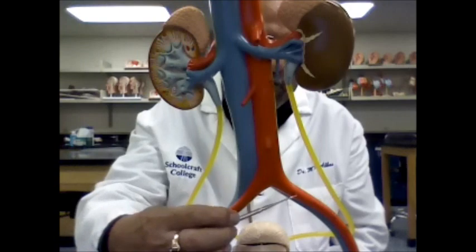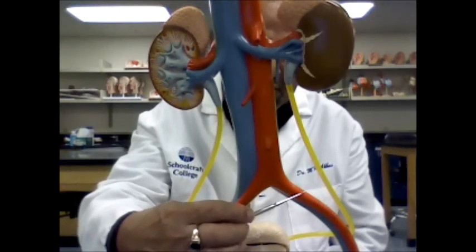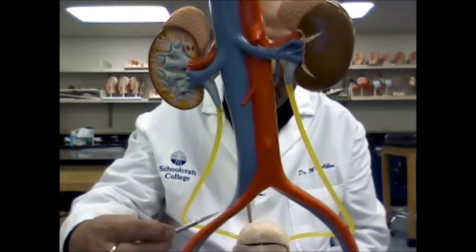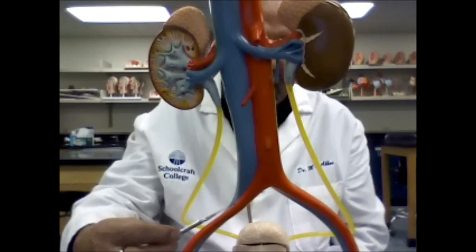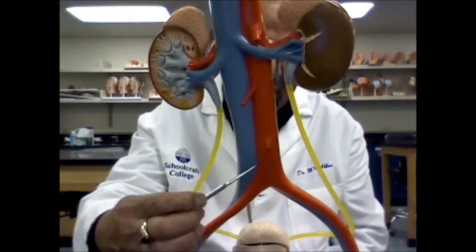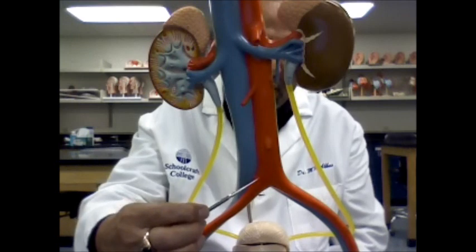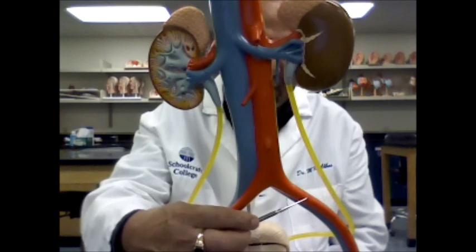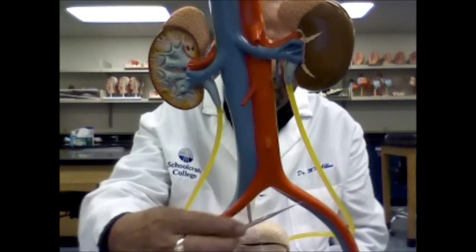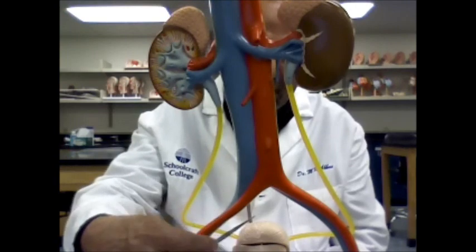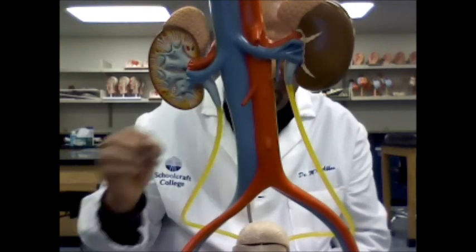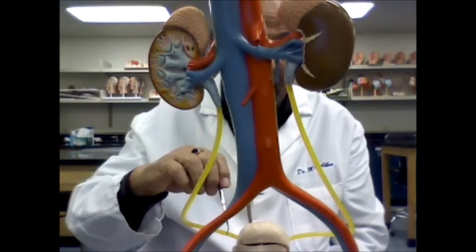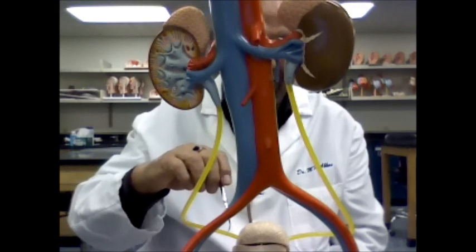The two red blood vessels coming off the abdominal aorta are the common iliac arteries. The two blue vessels next to the arteries are the common iliac veins.